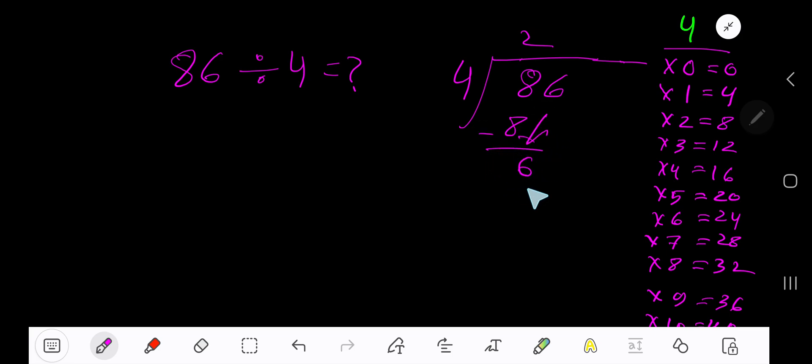0 6 means 6. 4 goes into 6 how many times? 1 times 4 is 4, 2 times is 8, which gets us 1 time. Write 1. 1 times 4 is 4. Subtract, 2. So our answer is 21 remainder 2.